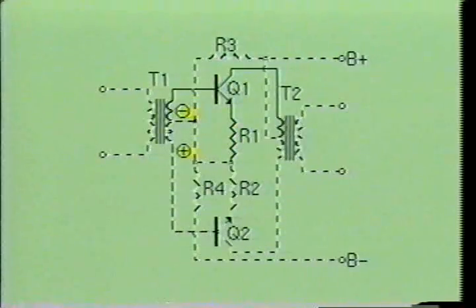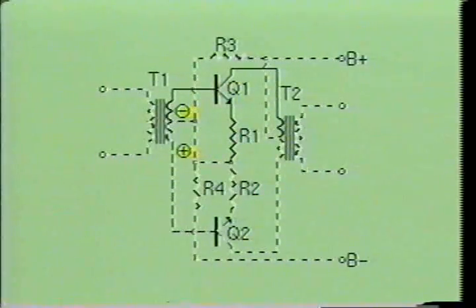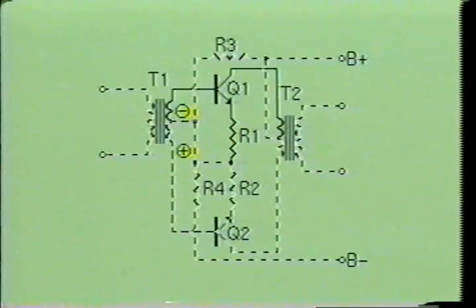When the input signal reverses and the top of the secondary of T1 becomes negative with respect to the bottom, the current flows from the center tap on the secondary of T1 into the junction of R3 and R4. Q1 is now reverse biased and Q2 is forward biased, so the current now flows through R2 and into the emitter-base junction of Q2. Some of the current flows through the base and back to the bottom of the secondary of T1, while the remaining current flows through the collector of Q2 and into the bottom of the primary of transformer T2. From here the current flows to B+, and a small bias current flows from common through R4, then through R3, and back to B+.